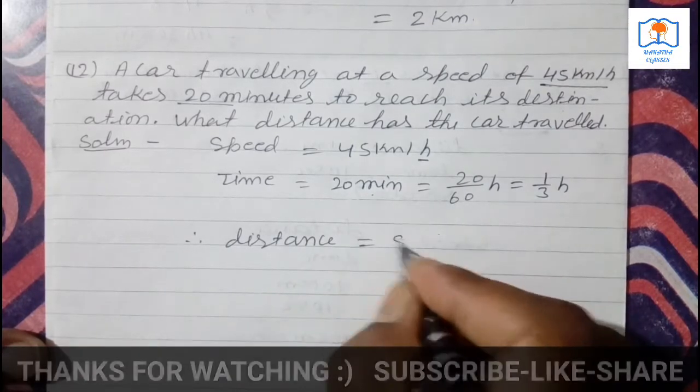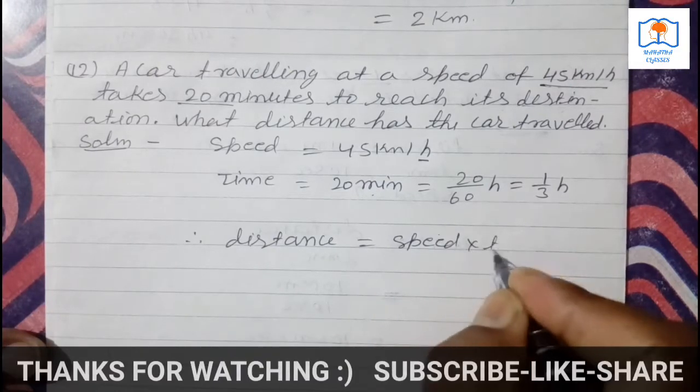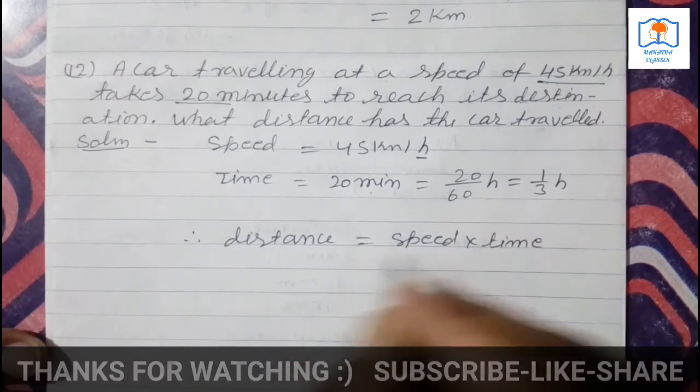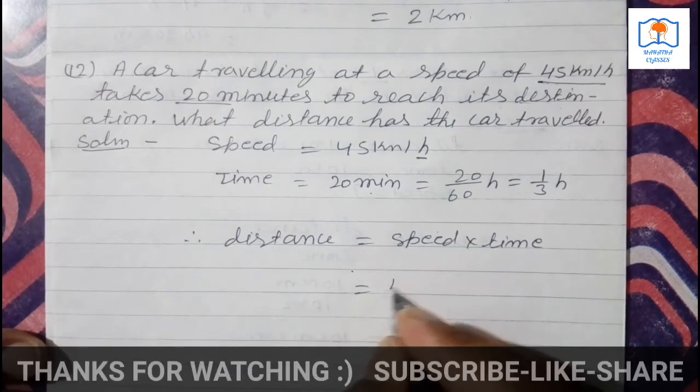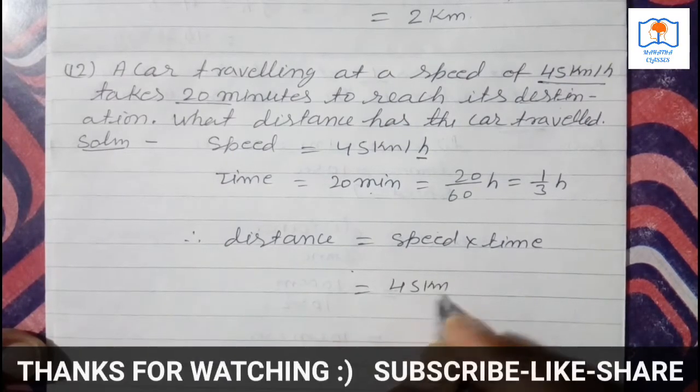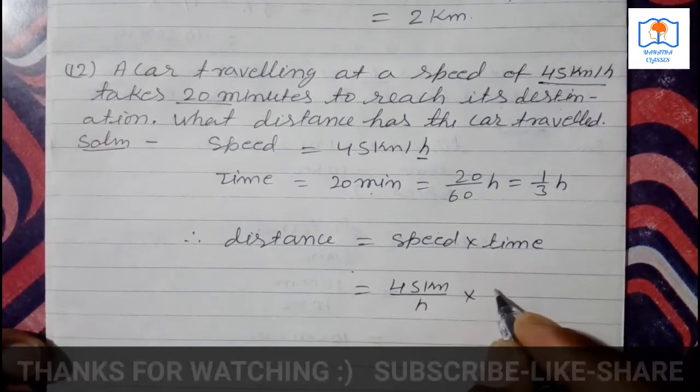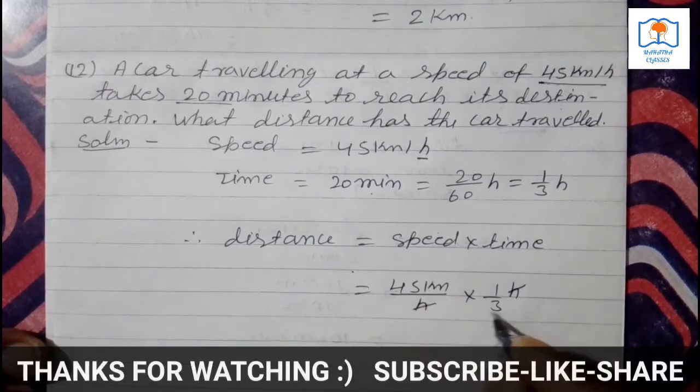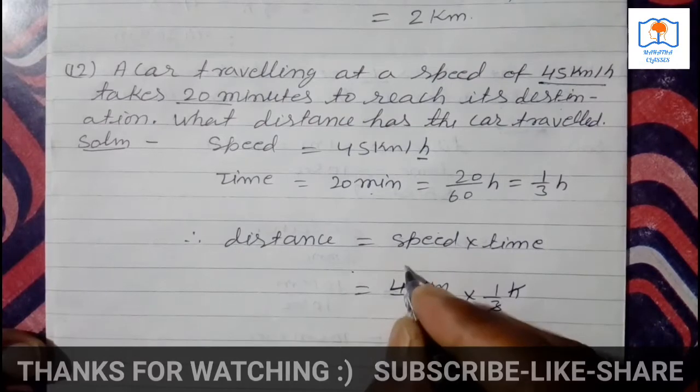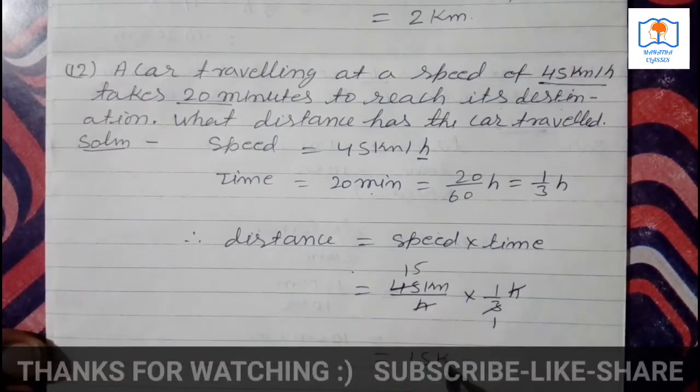Distance is equal to speed into time. 45 km per hour times 1 by 3 hours. 45 divided by 3 equals 15 km. Children, if you have any doubts, you comment it.